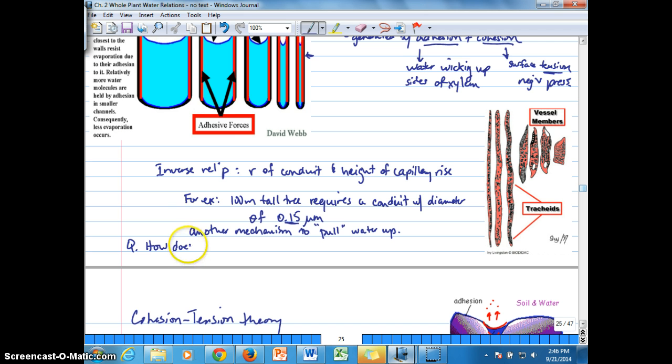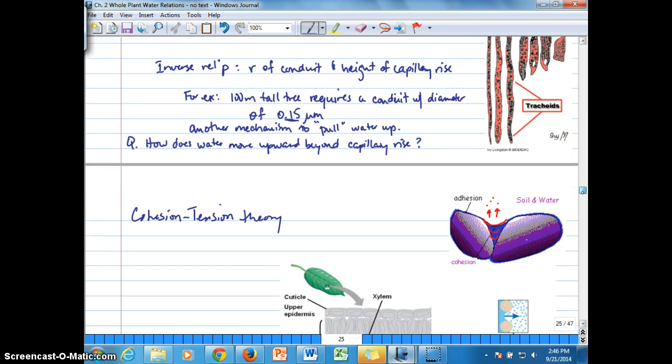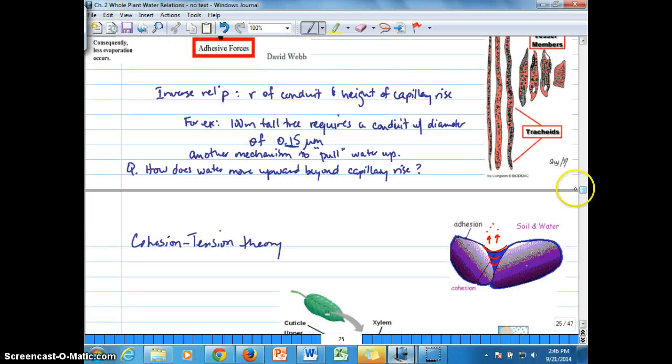How does water move upward beyond the limitations of capillary rise? The answer, the explanation that is most widely accepted to account for that additional negative pressure pull upwards, is the cohesion-tension theory of sap ascent, as it's described in your textbook.